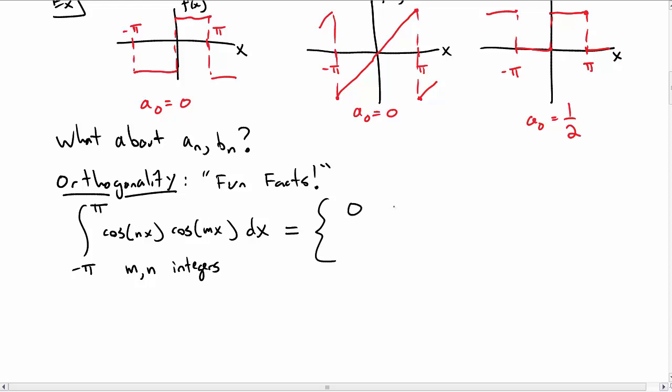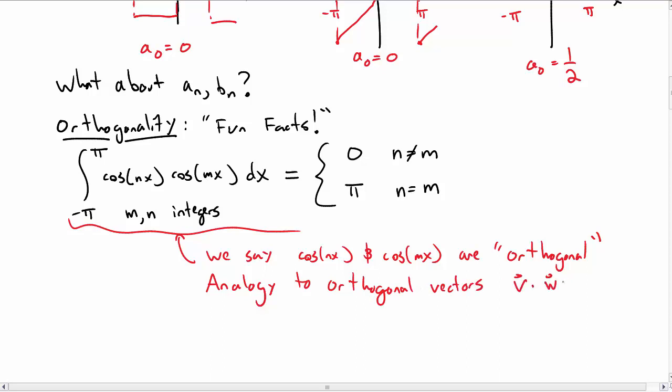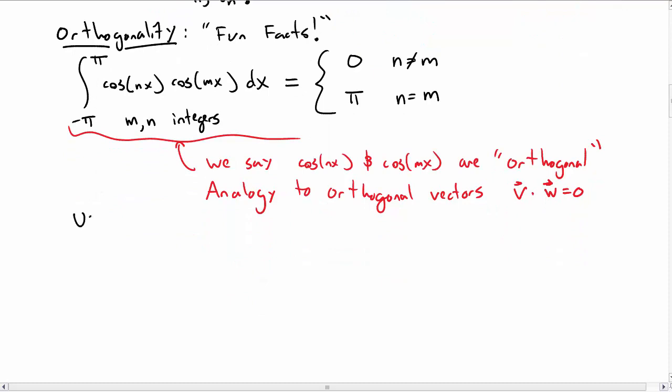So if you do this integral, it turns out you will either get zero if n is not equal to m, or you get π if n is equal to m. So that's kind of nice. And we call this orthogonality. And so we end up saying that cosine of nx and cosine of mx are actually orthogonal to each other. Namely, if they're not the same, then their integral is zero. There's a clear analogy we're making here to orthogonal vectors, where if you dot two orthogonal vectors, you get zero. And so the idea here is taking the integral of cosine nx times cosine of mx is kind of like a dot product.